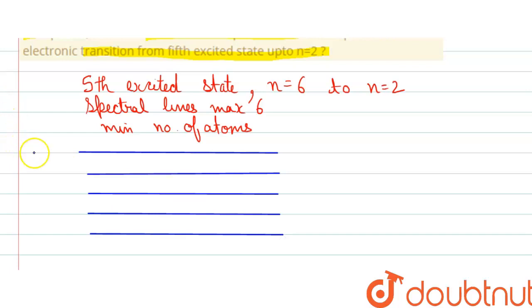First is the fifth excited state, that is n equals to six; then the fourth excited state, that is n equals to five.